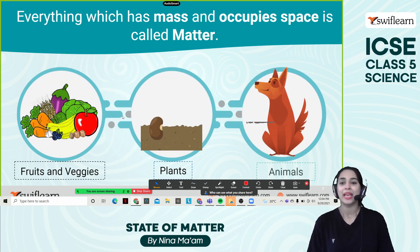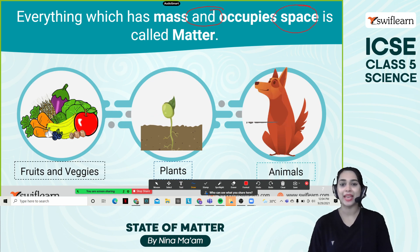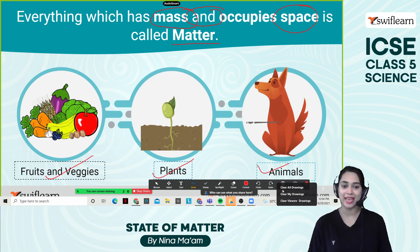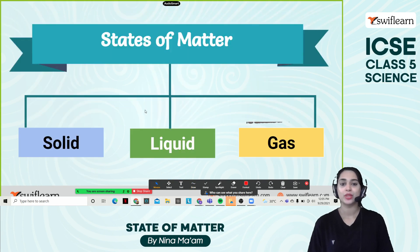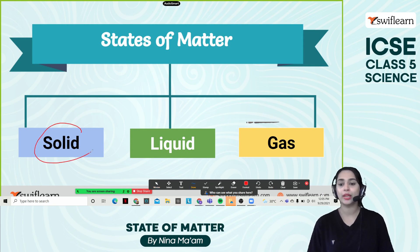Everything which has mass and it occupies space is called matter. So if everything has mass and occupies space, it is called matter. It can be fruits and vegetables, it can be plants and animals. The states of matter can be divided into three main categories such as solid, liquid, and gas. These are the three major states of matter.